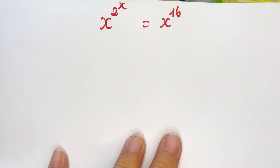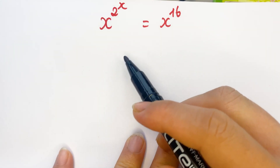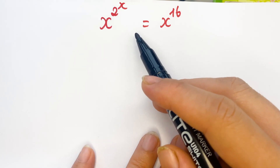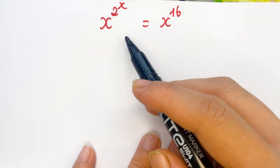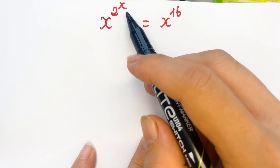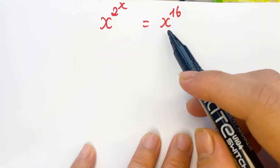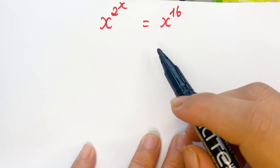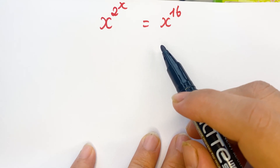Hello everyone! How to find the value of x in this exponential equation? x to the power of 2^x equals x to the power of 16.